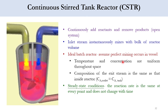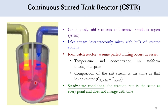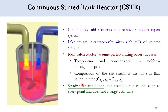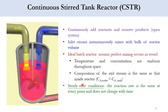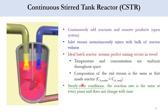Due to agitation in the system, we assume that perfect mixing occurs in the vessel. Temperature and concentration are uniform throughout the space. The composition of the exit stream is the same as that inside the reactor, and conditions are at steady state — meaning at any given time, whether at 5 minutes, 10 minutes, or 15 minutes, you will find the same composition and the same conditions. Unlike the batch reactor, the CSTR is steady state but spatially uniform.